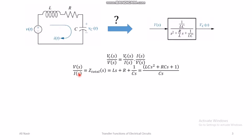V over I is the total impedance in the circuit, because V is the sum of voltage drops across all three series elements. So V over I equals the total impedance: the impedance of the inductor Ls, plus the series resistor R, plus the impedance of the capacitor 1/(Cs). Taking Cs as the common denominator and simplifying gives the total impedance expression.